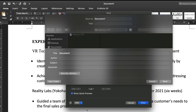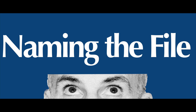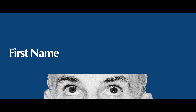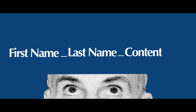I will choose Save as PDF, which will open up another dialog box. Now it's time to name the PDF. A best practice to use is your first name, underbar, your family name, underbar, the content of the document, and then the date. This naming convention will help recruiters and hiring managers find your application materials quickly.